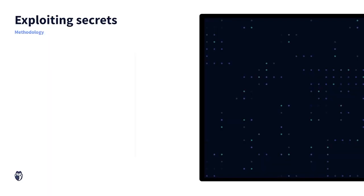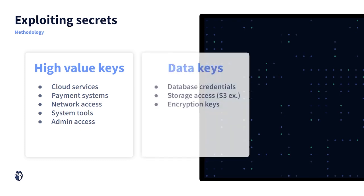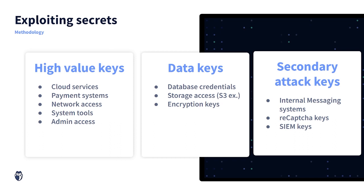Typically, these might be things like cloud service keys or payment system keys — something that's going to give me an immediately quick win. Other keys we're going to look for are data keys — keys that give us access into a database like an S3 bucket, or encryption keys that we can use to decrypt sensitive data stored in those databases. The third area of keys we're really going to be looking for, but will put on the back burner, are what I'll call our secondary attack keys. These are keys that we can use to launch different attacks but are going to take some time, so we want to put them aside and get our quick wins first.